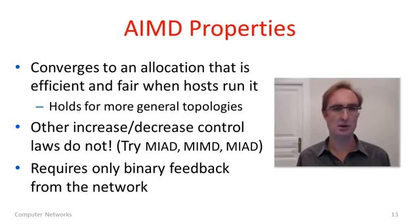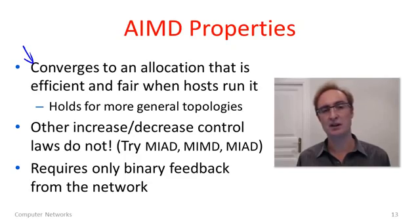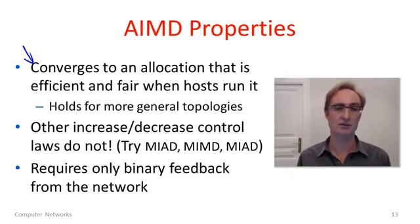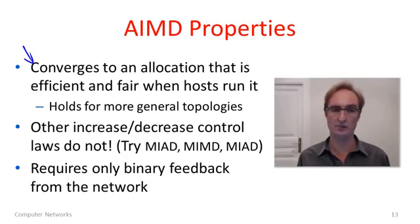AIMD converges to an allocation that's fair and efficient when you run it, no matter where you start from. It might not seem very interesting on that small topology, but this holds for more general topologies and larger numbers of flows playing this game together — even though everyone is acting independently with only a little feedback from the network. They don't know who they're competing against, they don't know how much bandwidth others have. They just know if the network's congested or not. They follow AIMD, and everyone ends up at a good allocation.